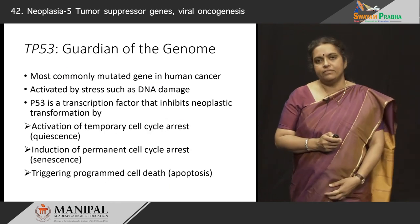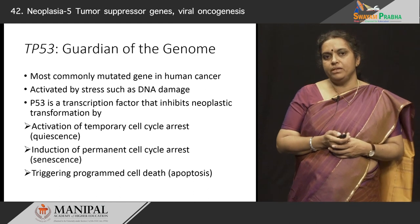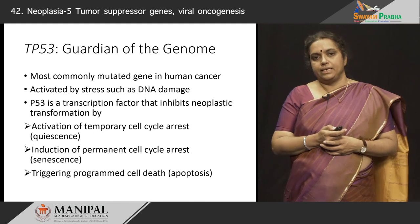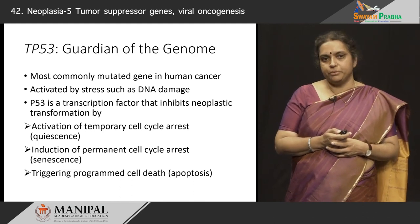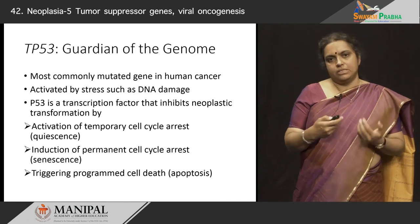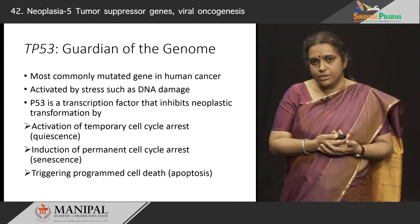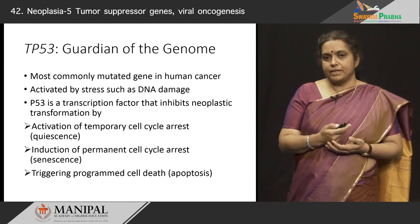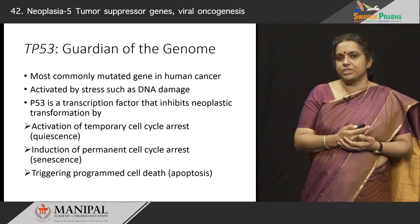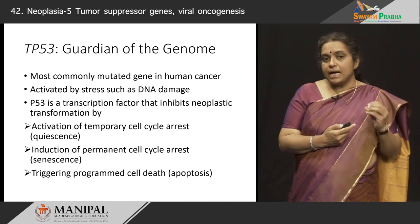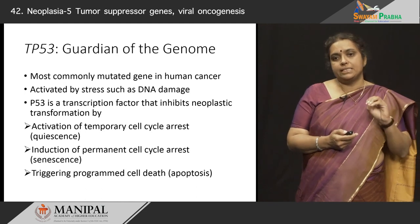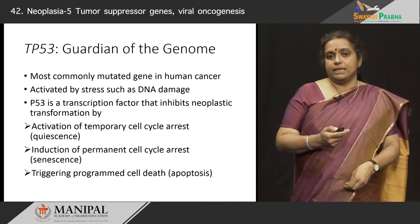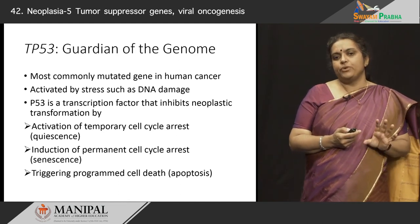The second gene which is very important is known as the p53 gene. The retinoblastoma gene is called the governor of the cell cycle, whereas p53 is the guardian of the genome. P53 is a very important transcription factor that inhibits neoplastic transformation. What it actually does is activate temporary cell cycle arrest or quiescence, induce permanent cell cycle arrest or senescence, and trigger programmed cell death.